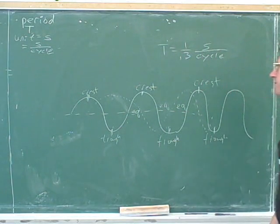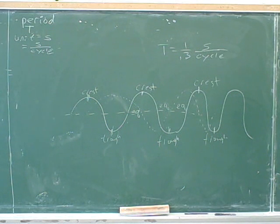How would we interpret it if the period was 1/3 of a second per cycle? It takes 1 second for every 3 cycles to occur, so that would be 0.3 seconds for 1 cycle.